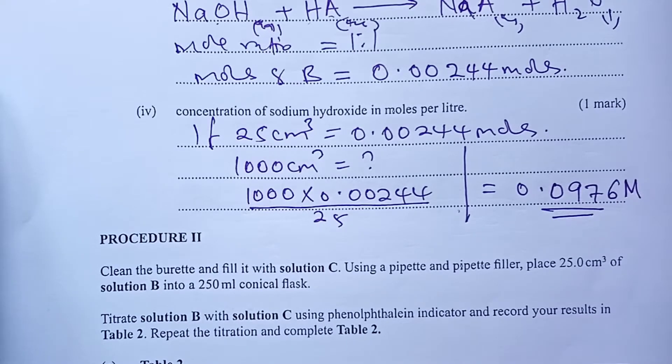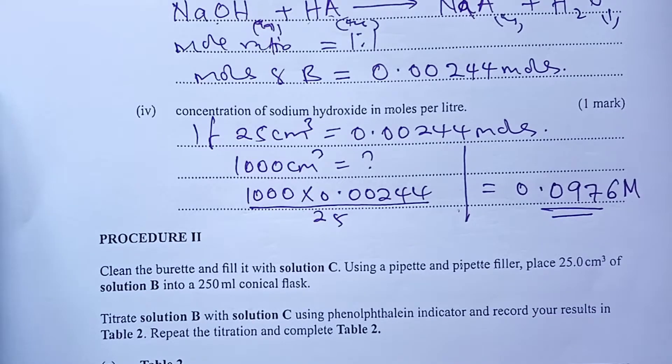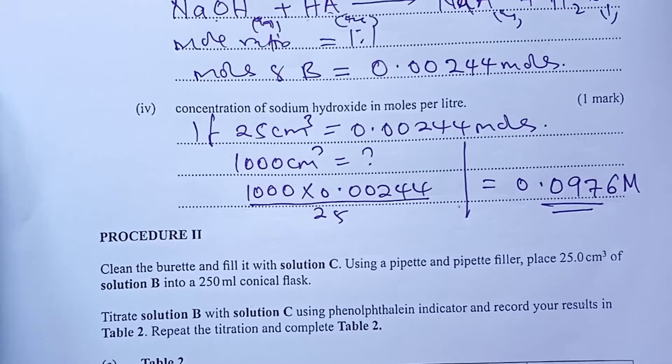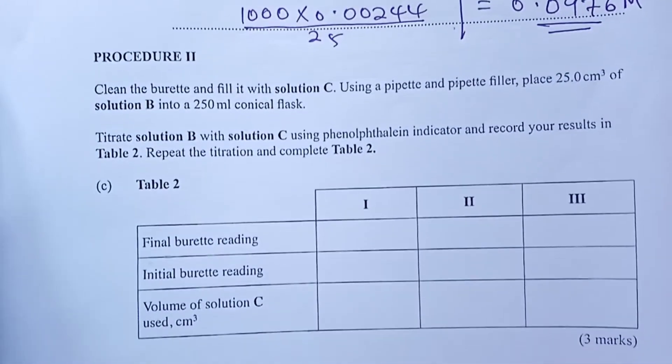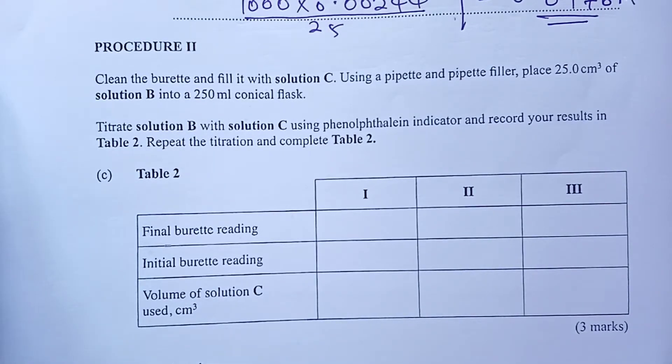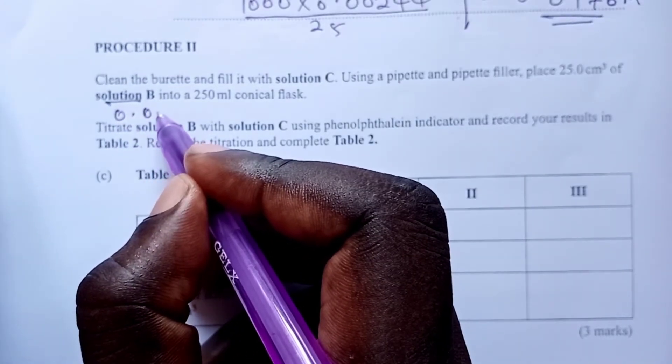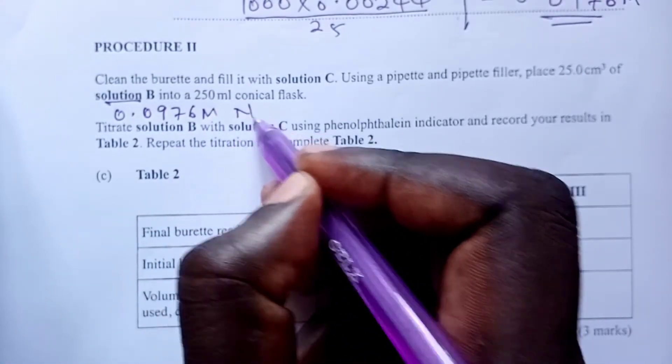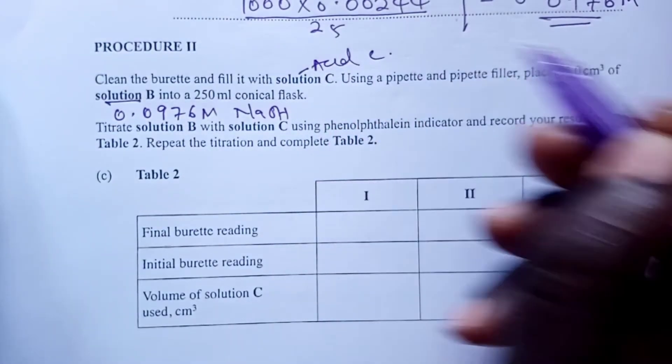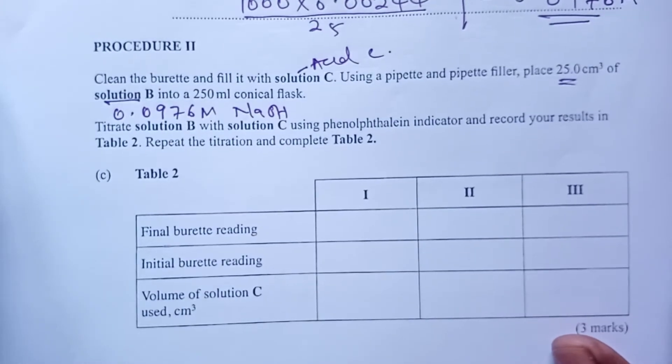So as I explained earlier, this was a double titration. So having finished with titration 1 and having done all the calculations that followed, we were supposed to do another titration in procedure 2. Let's have a look. So clean the burette and this time we are filling it with solution C. Solution C was an acid C which is not known. So using a pipette filler, place 25 of B. So this time around, B, we have been able to calculate its molarity and we have found 0.0976 molar sodium hydroxide. This one is acid C which is not known. And of course we are using 25 of the sodium hydroxide. Now moving on.